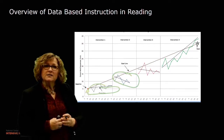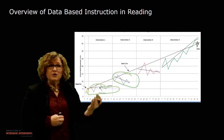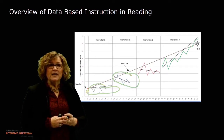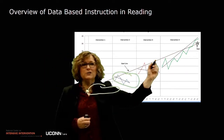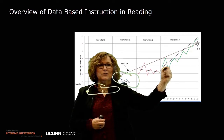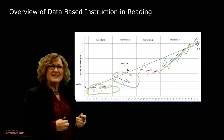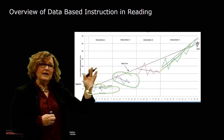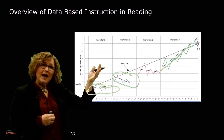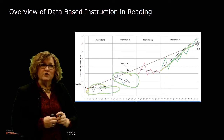In intervention three, data is stronger this time. The student is growing, but the trend is still not on track to meet the goal. And finally, in intervention four, look at this nice, lovely trend going up. The trend is actually on track and surpassing the goal in this case — a great ending to all of that persistence.